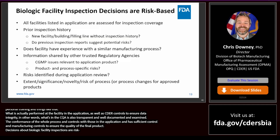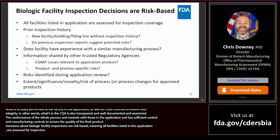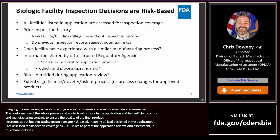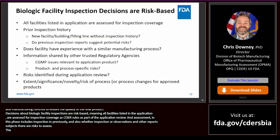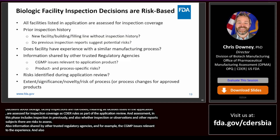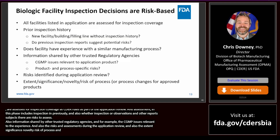Decisions about biologic facility inspections are risk-based — all facilities in the application are assessed for whether an inspection is needed and what inspectional tools to use. This assessment considers the previous inspection history of each facility, including whether observations or other information in inspection reports suggest risk. It also considers information shared by trusted regulatory agencies through mutual recognition agreements, whether the facility has experience with a similar manufacturing process, whether newer or novel technologies are involved, and whether specific risks are identified from the application review itself.